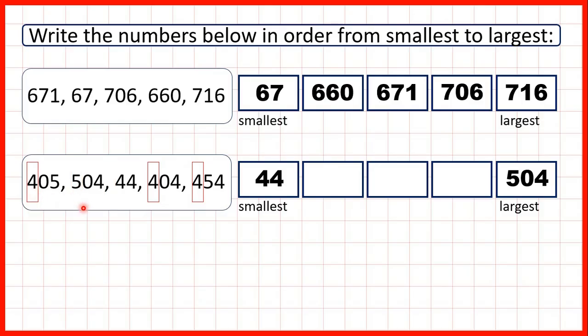So now we have three numbers that all have four hundreds. So what we need to do is compare the tens digits. We have zero, zero, and five. That means that this number with five tens must be second largest.